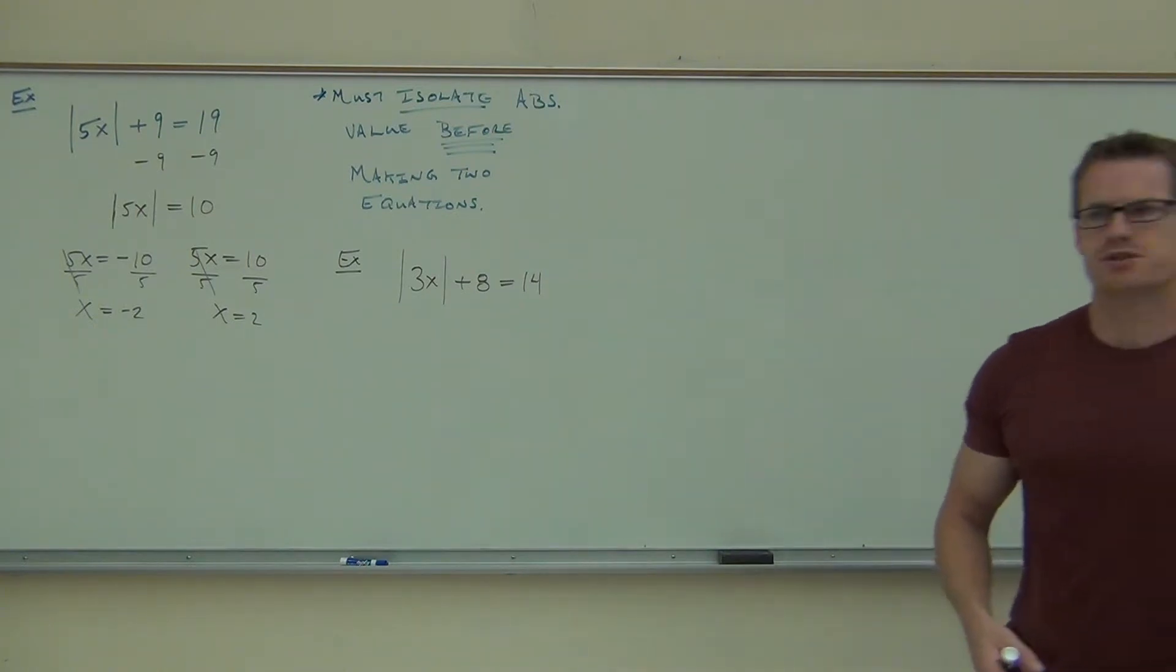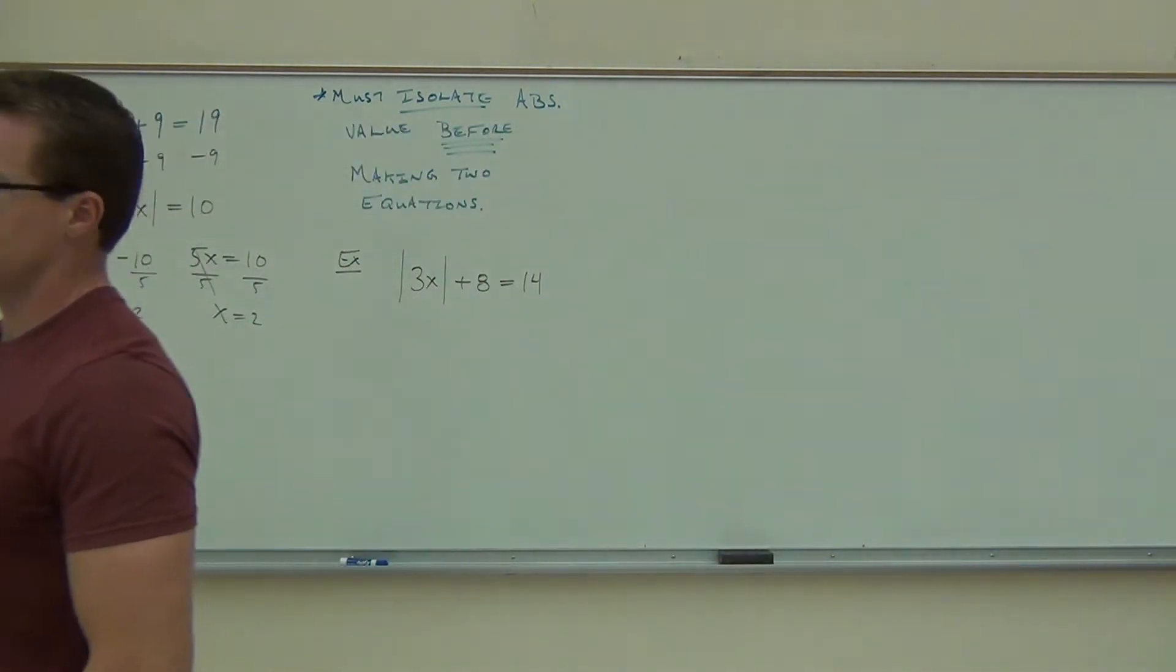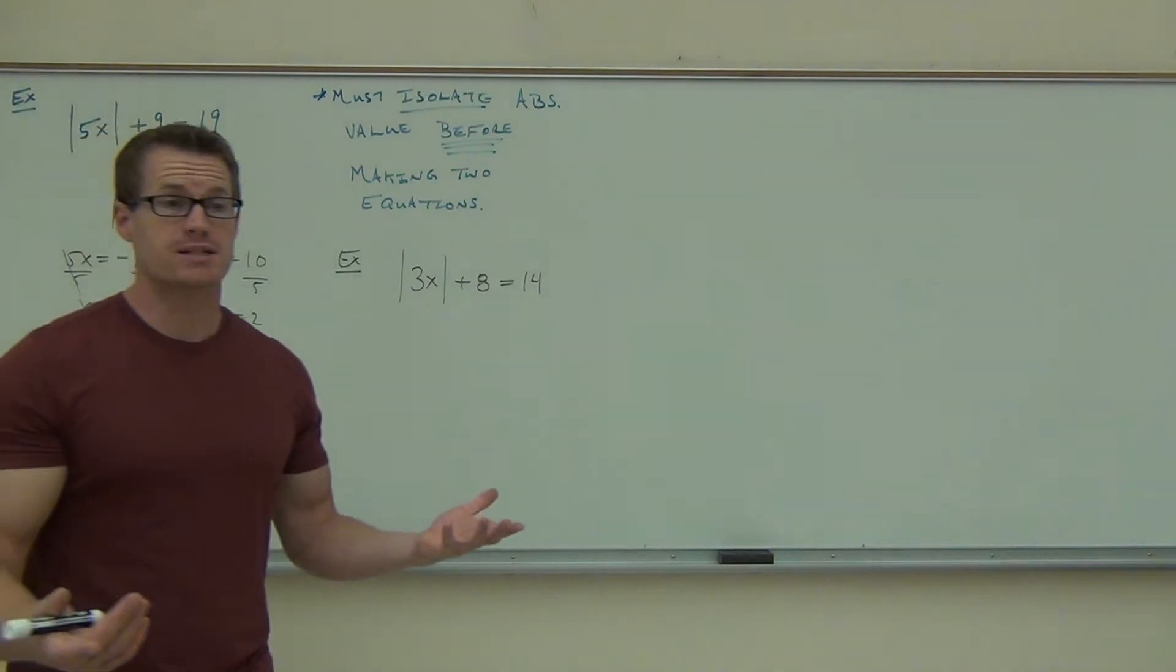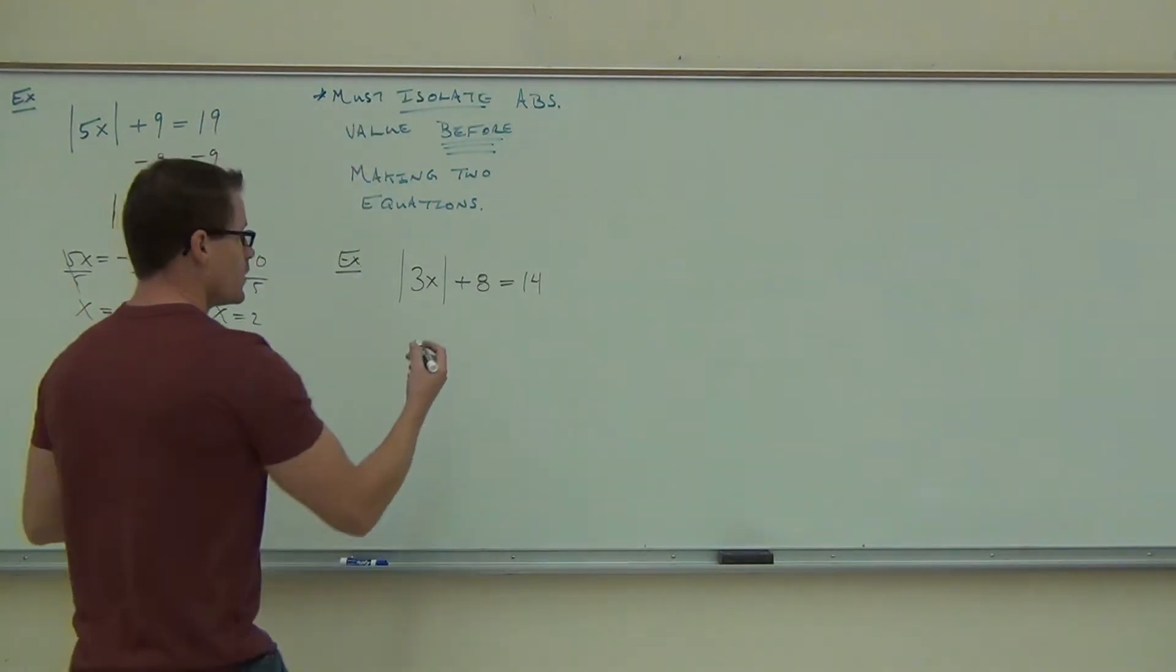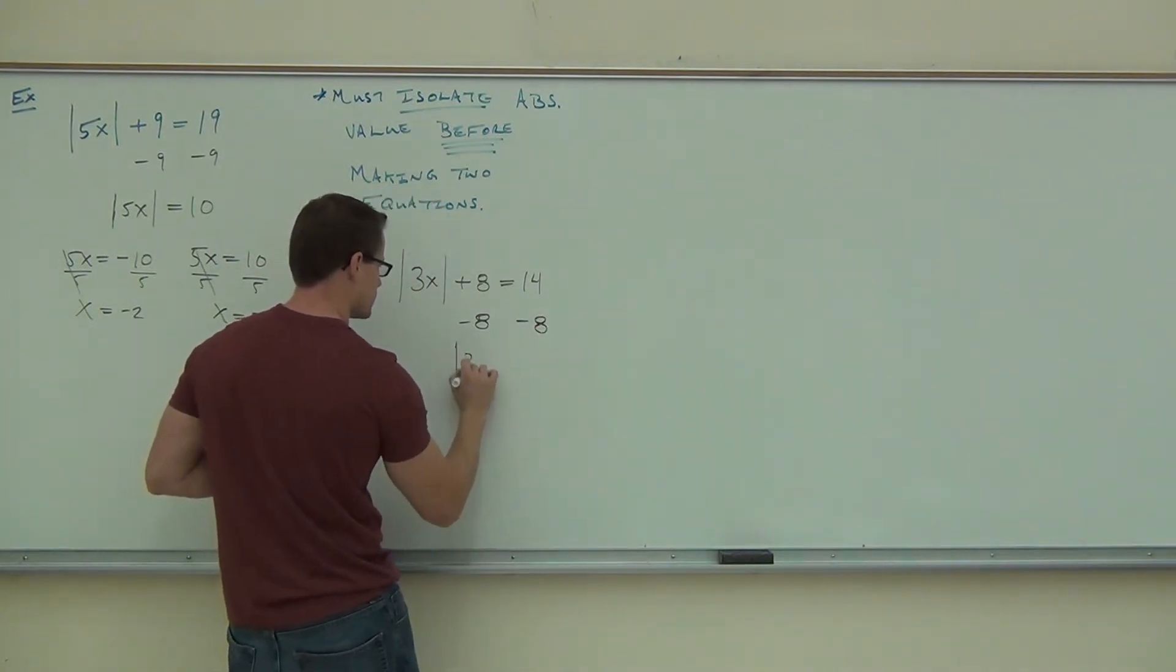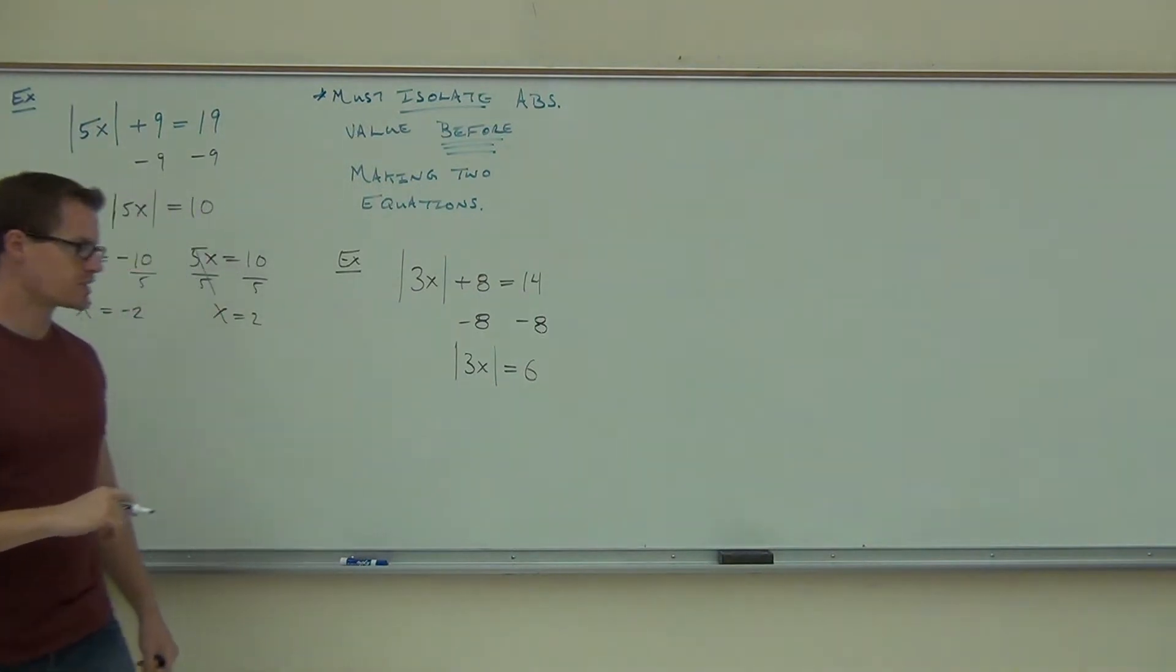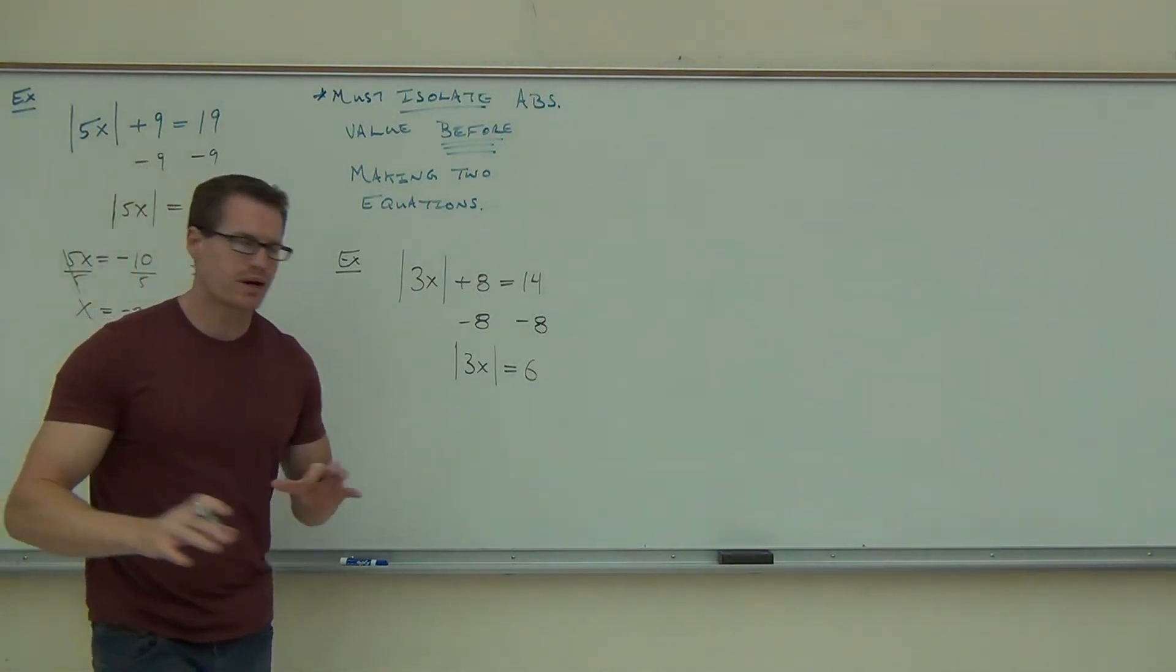So what did we do first? Do we subtract 8 first or do we make two equations first? Subtract 8. Sure. You have to have your absolute value isolated before you make those two equations. So when we subtract 8, the absolute value of 3x equals 6, that's where we can make those two equations.